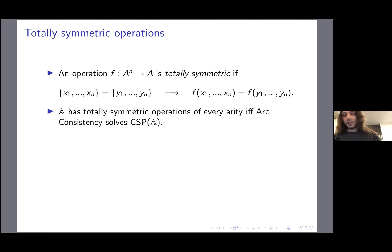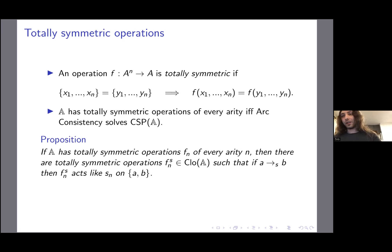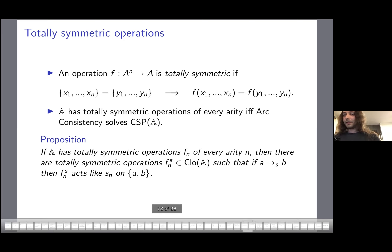One more case: totally symmetric operations. Totally symmetric is stronger than symmetric — it means that as long as the multiset of variables on each side are the same, the two sides are equal. An example: a totally symmetric operation must satisfy an identity not implied by symmetry alone. An algebra has totally symmetric operations of every arity if and only if arc consistency solves the CSP, and there exists an algebra with symmetric but not totally symmetric operations of every arity. If you have totally symmetric operations, a more complicated construction ensures f_S^n acts like Sₙ on {a,b}.